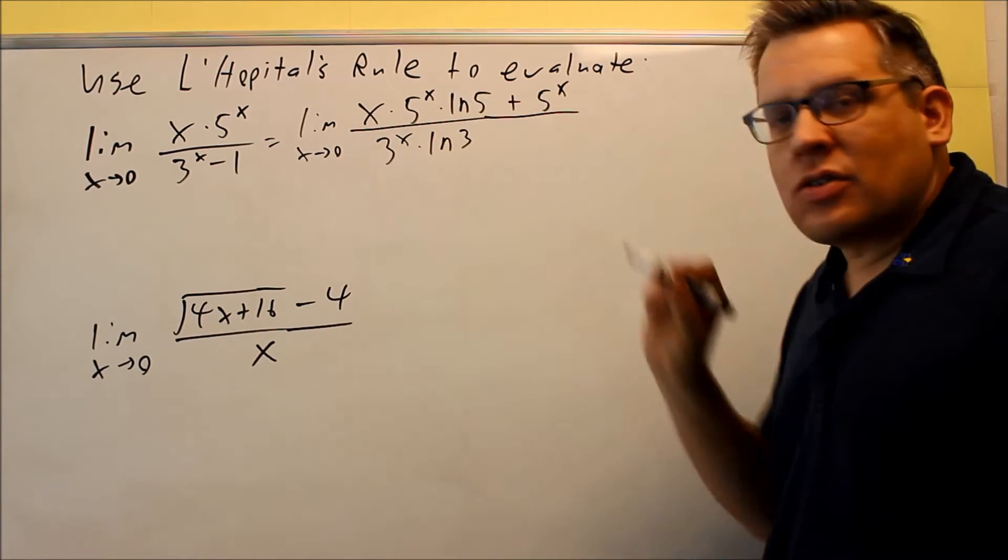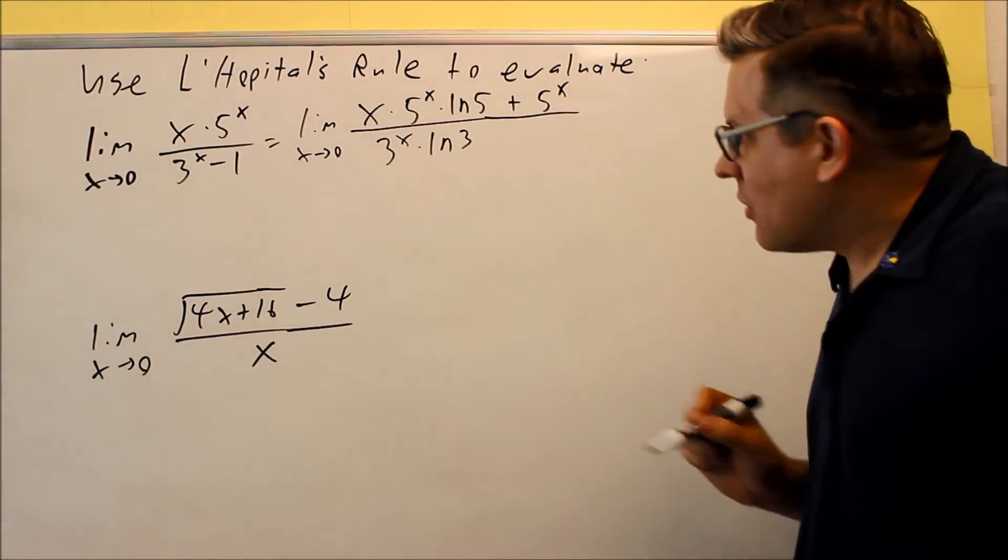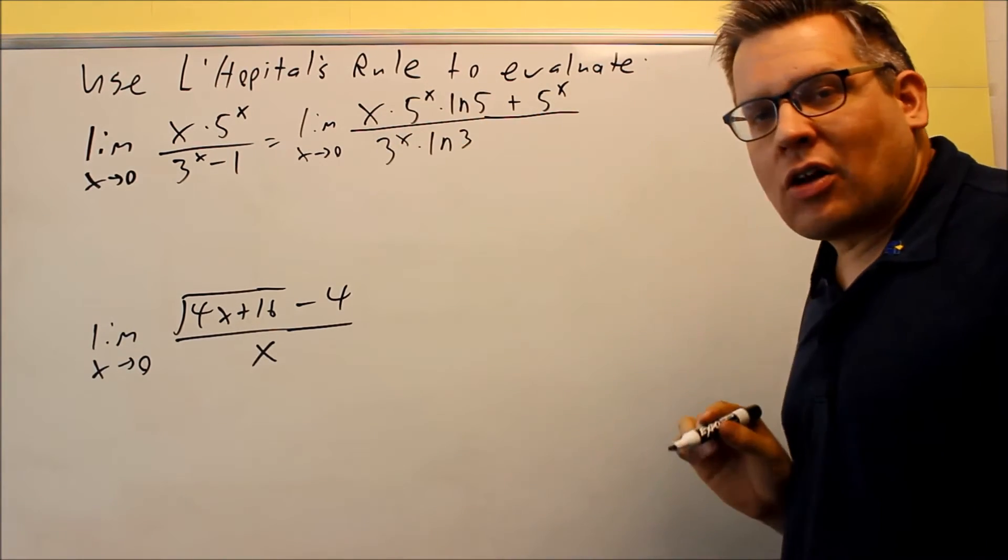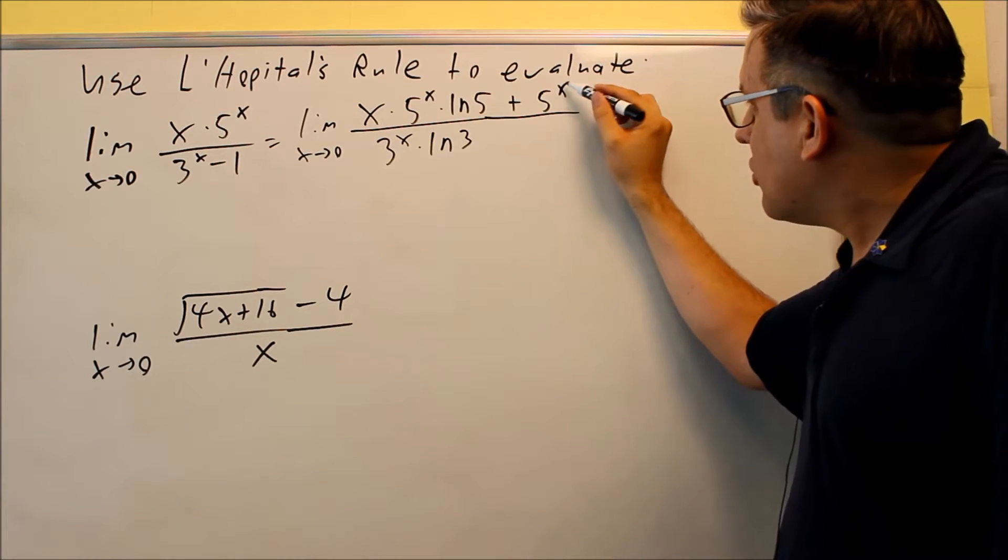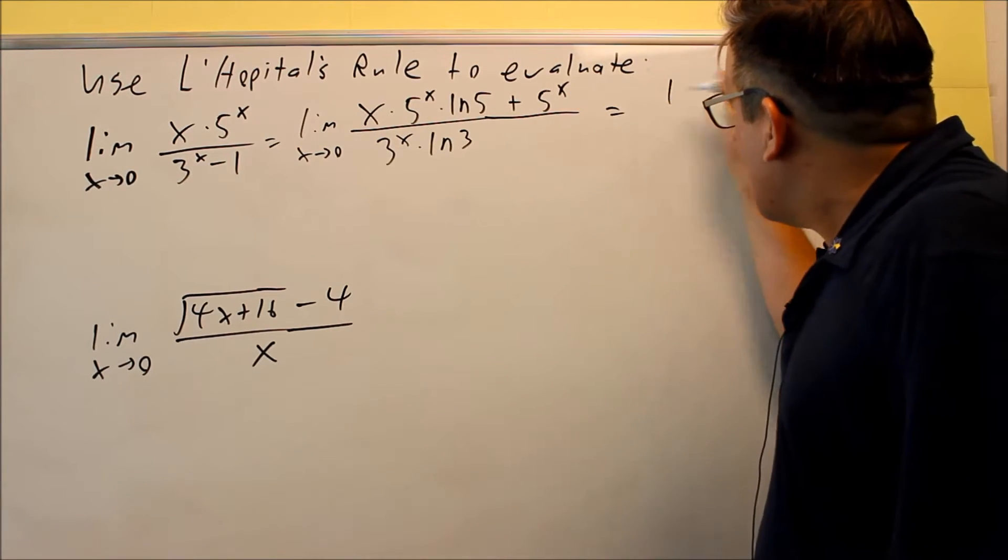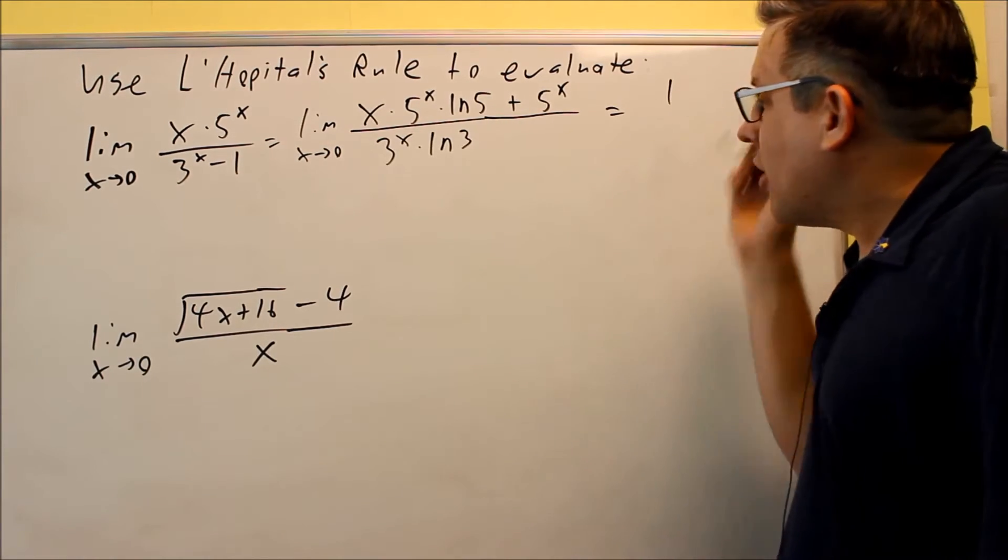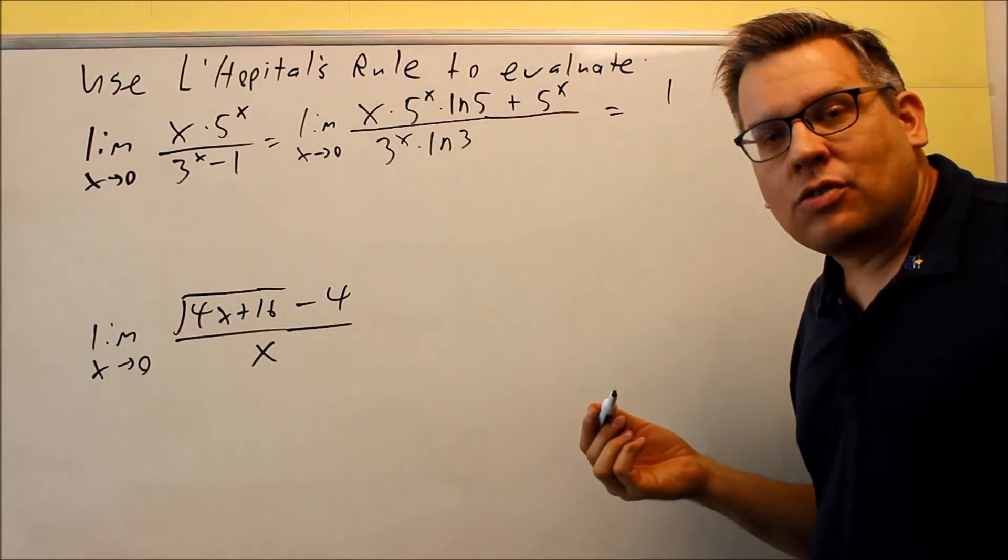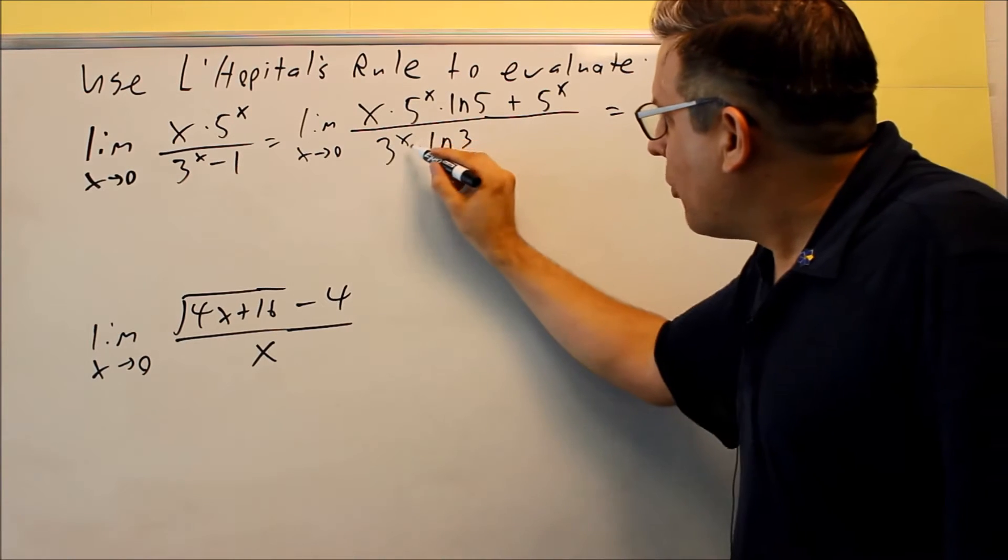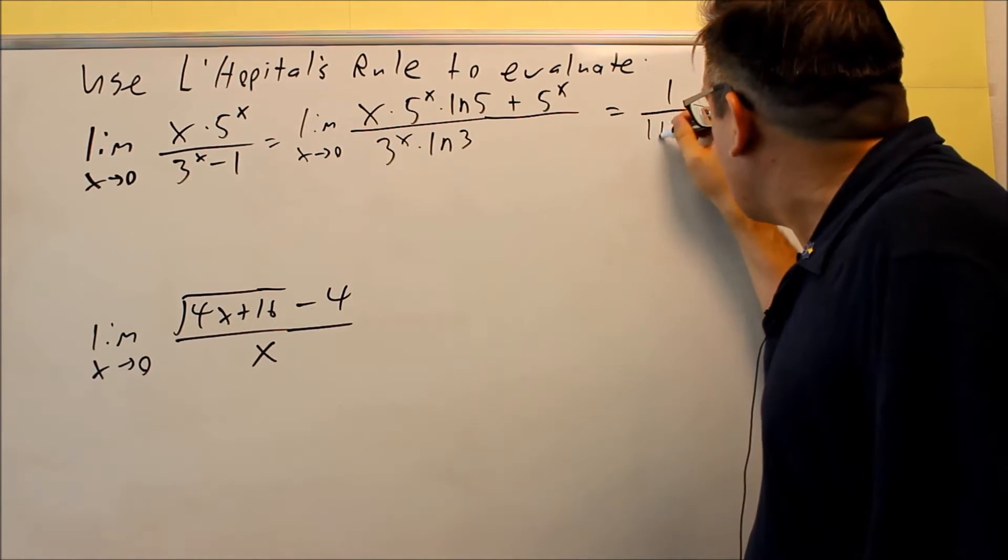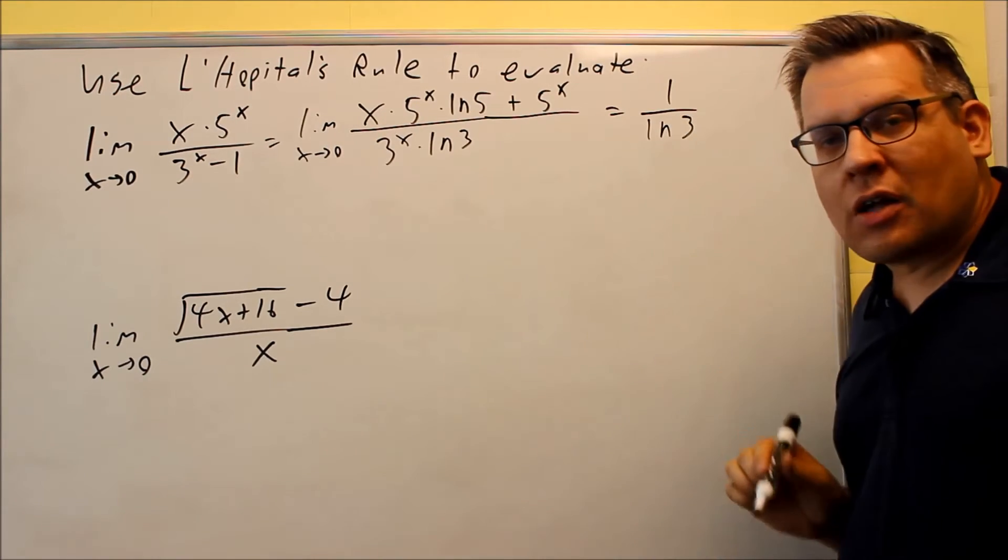Now let's substitute 0 into the top and bottom. If I put 0 in this first piece, 0 times anything is gone. But if I put 0 here, I get 1. Because I don't get 0/0, I can get my final answer—no more derivatives needed. On the bottom, 3^0 is 1, so I get 1/ln(3), which is the answer for the first problem.